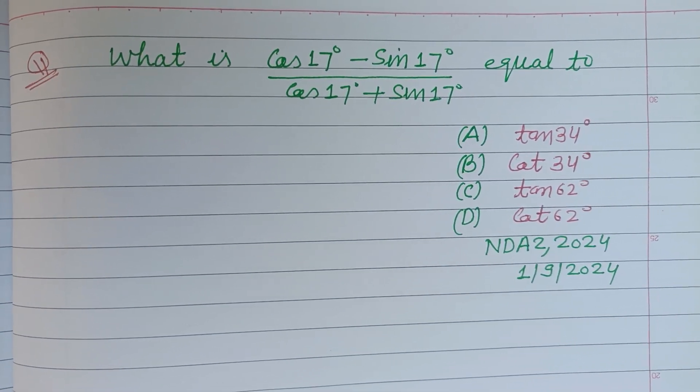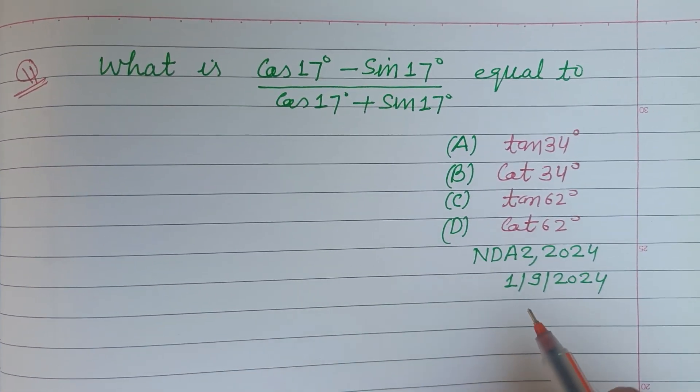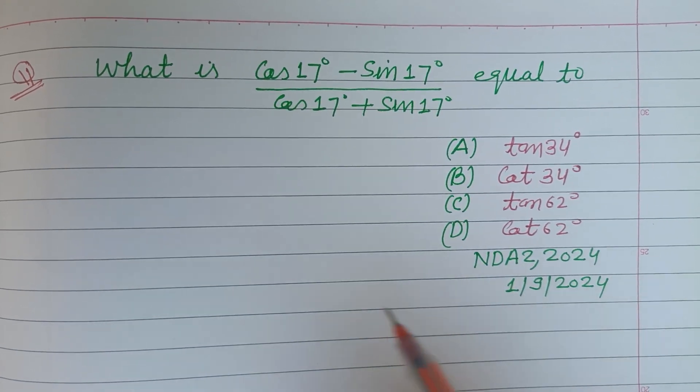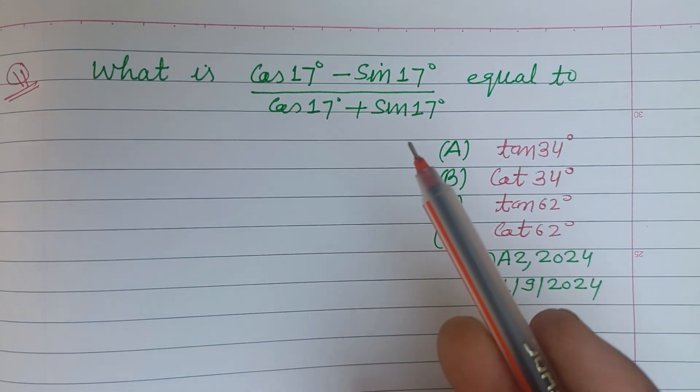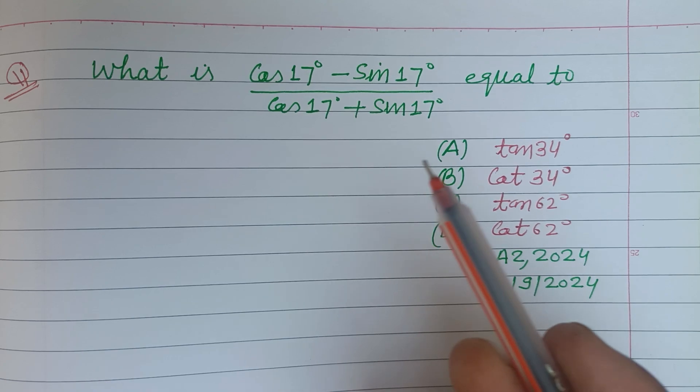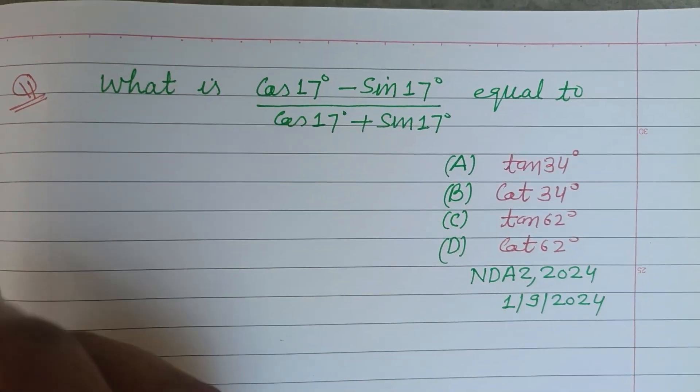Hello viewers, welcome to this YouTube channel. This question is from NDA second 2024. What is cos 17° minus sin 17° upon cos 17° plus sin 17° equal to? So students,